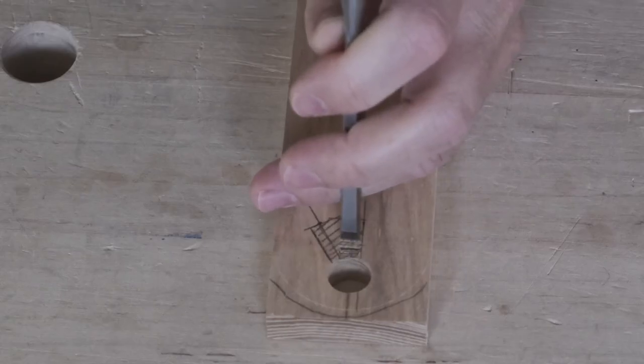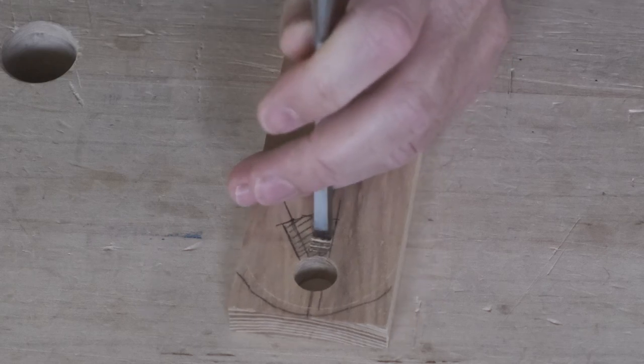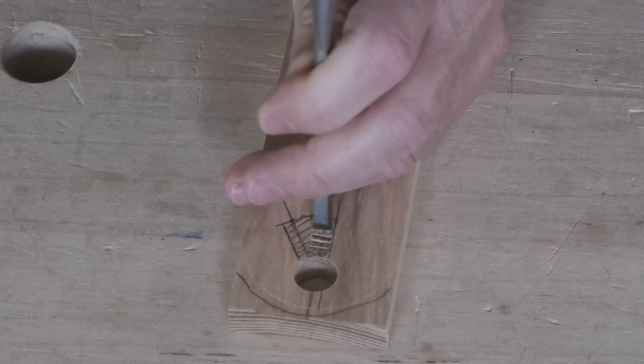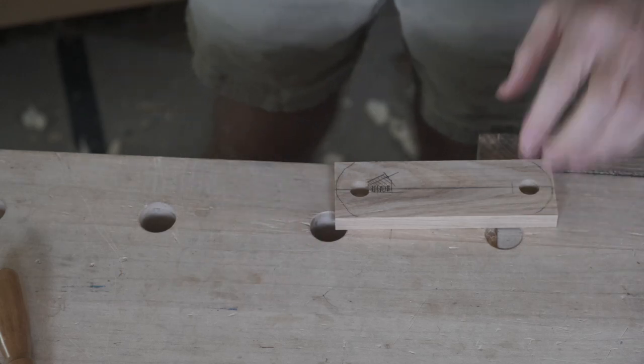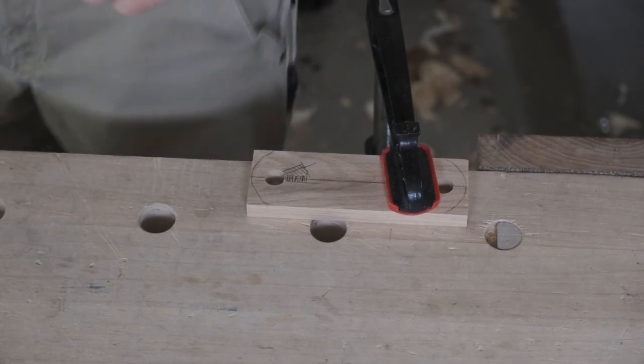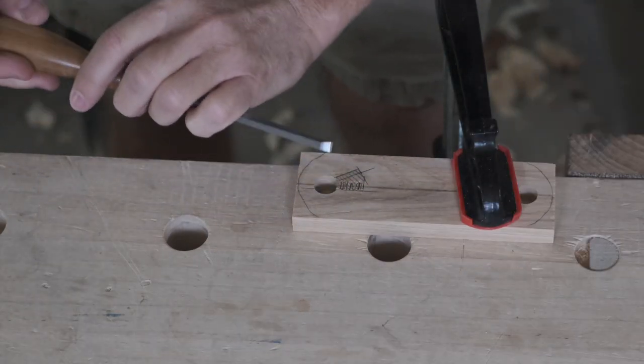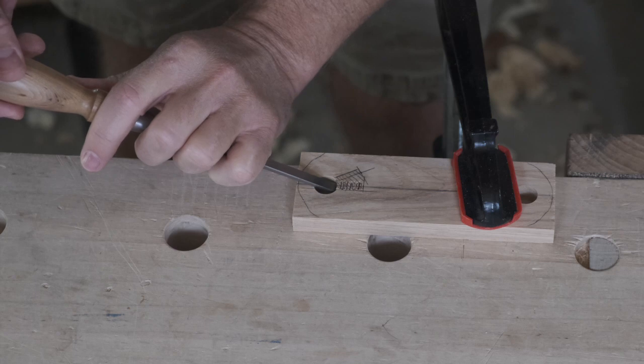I'm not trying to go the full depth all at once. It's moving around on me, so I'm going to sit it over here and clamp it to the bench. Before I get all the way to this back shoulder, I'm going to put the bevel side down and remove some of this waste.